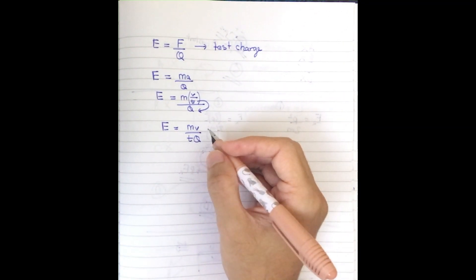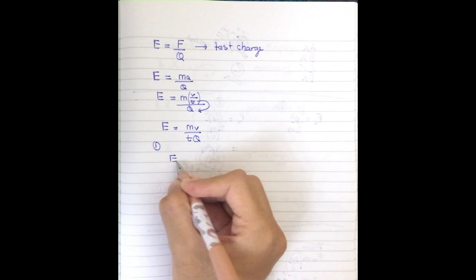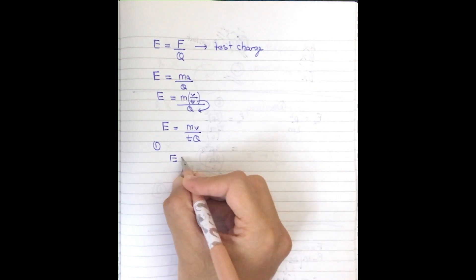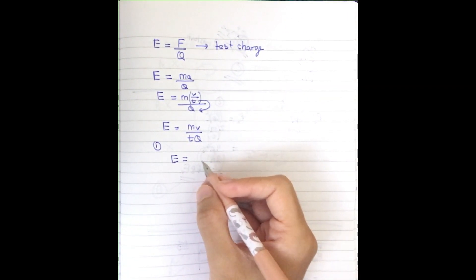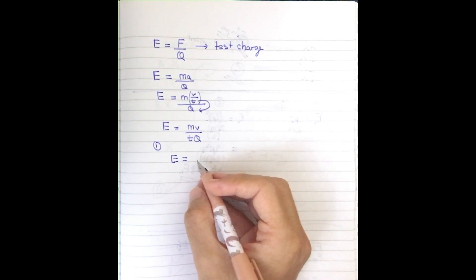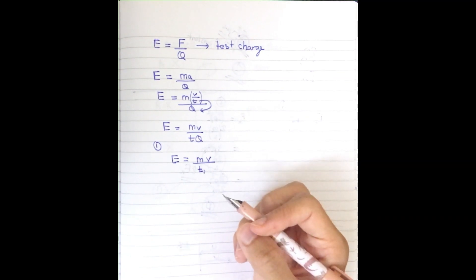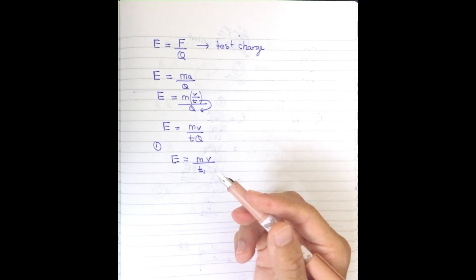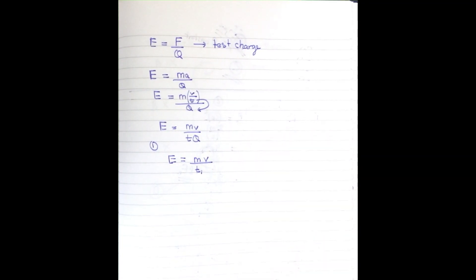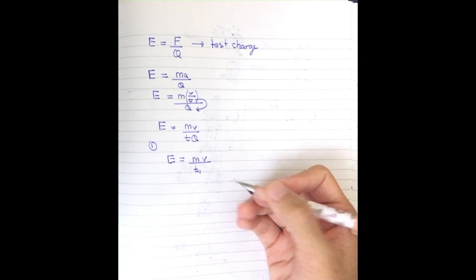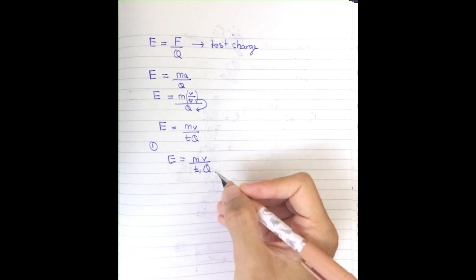For case one, the proton: I substitute into E equals mv over tq. The time is t1 — I use t1 specifically for the proton because the two times are different. The charge of the proton is positive q. So for the proton: E equals mv divided by t1 times q.